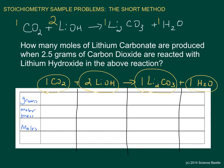Looking at the original problem, it asks for moles of lithium carbonate, so I'll mark that column with a question mark. We also know we have 2.5 grams of carbon dioxide, so I enter that in the grams row under CO2. Since we're trying to find moles of lithium carbonate, we need to first find the moles of carbon dioxide, which requires finding its molar mass.